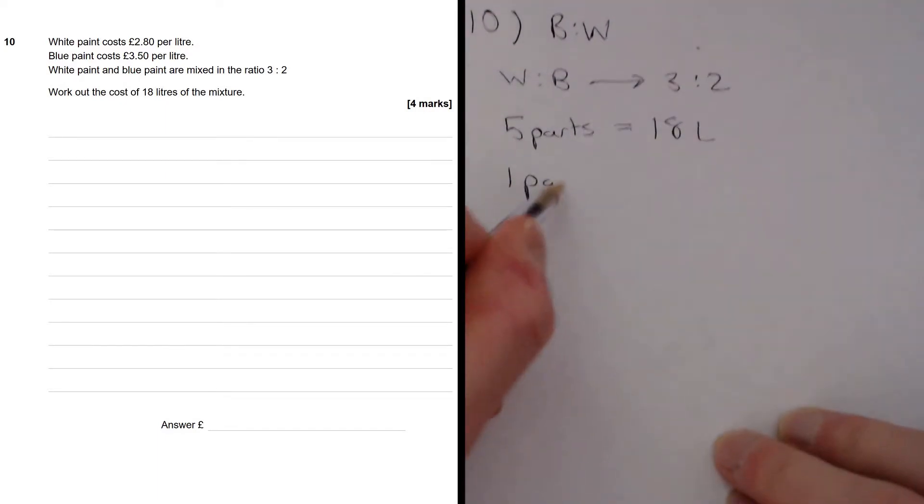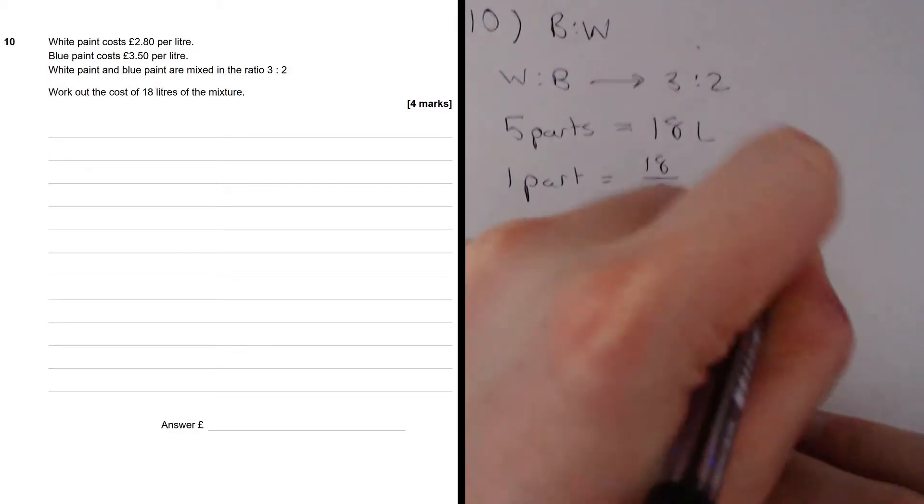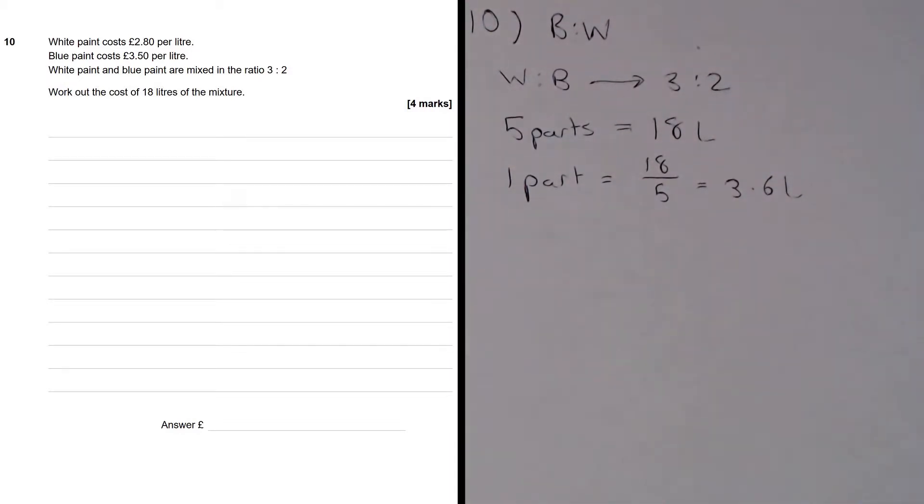So that tells us that 1 part is equal to 18 divided by 5 which is 3.6 litres. Remember dividing by 5 is the same as dividing by 10 then multiplying by 2, so that's how I did that quickly. 18 divided by 10 is 1.8, multiplied by 2 is 3.6. The reason we have done this is because we now know what 1 part is equal to and we know 3 parts are white paint and 2 parts are blue paint.